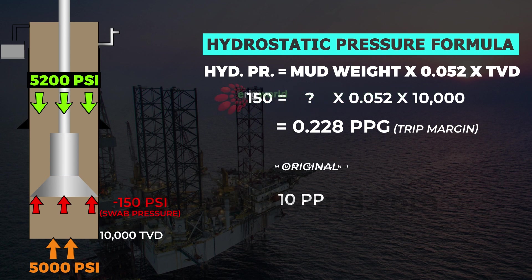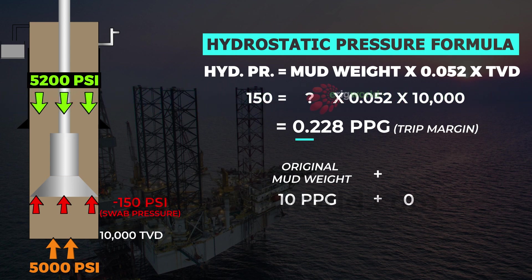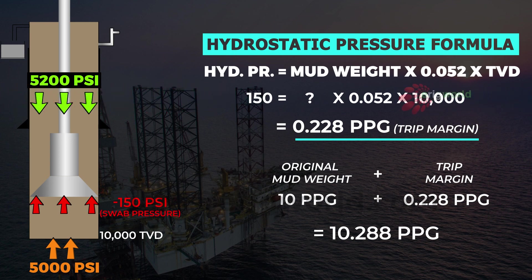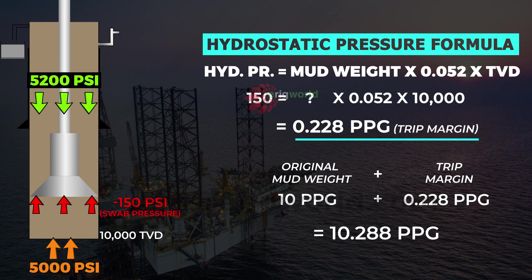The original mud density was 10 ppg. Adding the 150 psi trip margin requires adding 0.288 ppg, giving a final answer of 10.288 ppg. However, writing 10.2 or 10.28 would be wrong — trip margin and all mud weight values except maximum allowable mud weight must be rounded up to one decimal place. So the correct answer is 10.3 ppg.